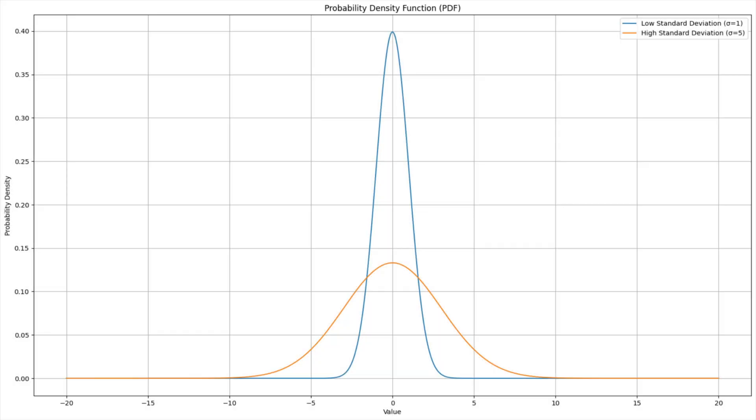A high standard deviation means that values are generally far from the mean. Values are spread out over a large range, like the curve in orange, while a low standard deviation indicates that values are clustered close to the mean, like the curve in blue.